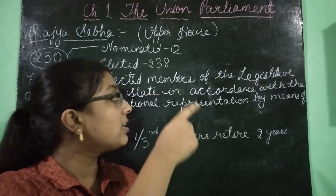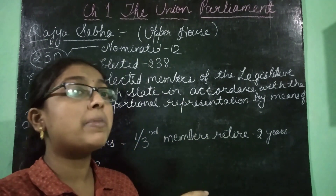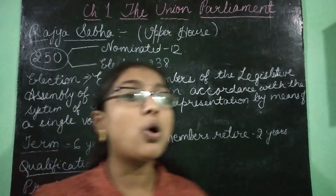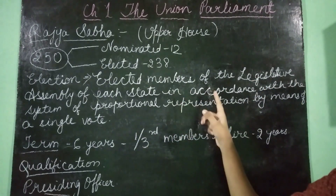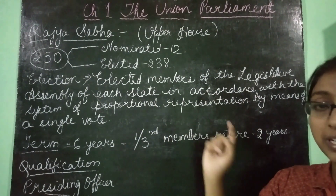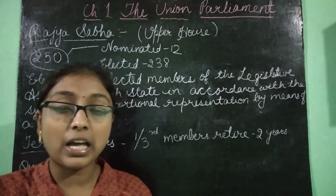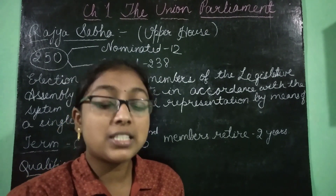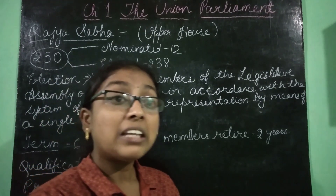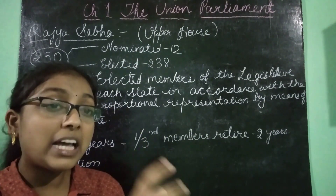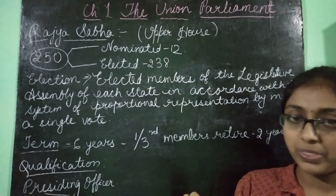The members of the legislative assembly are elected by Indian citizens, and in turn, these elected members of the legislative assembly elect the members of the Rajya Sabha. There is a speciality — in accordance with the system of proportional representation, the percentage of seats a party gets will be proportional to their share. This is the speciality in the election of members to the Rajya Sabha by means of a single transferable vote.